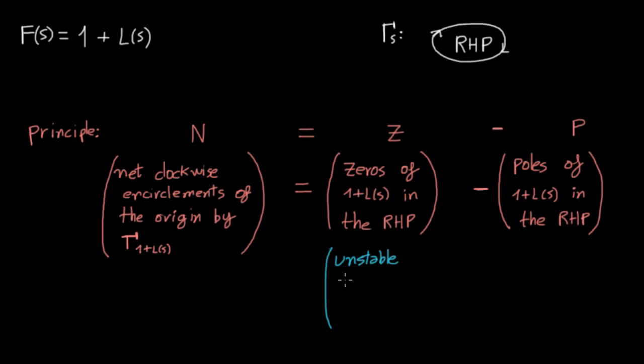But notice this, the zeros of 1 plus L are the roots of the characteristic equation, or in other words, the closed-loop poles. So, in this scenario, z is the number of unstable closed-loop poles. This is what we are looking for.